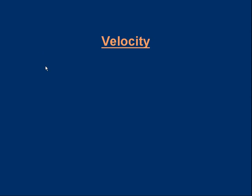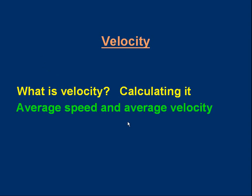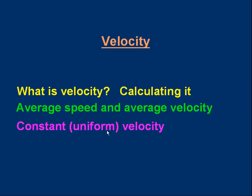Hello. In this lesson we'll look at velocity. We'll remind ourselves what it means and say something about how to calculate it. We'll also look at average speed and how to find average velocity. The term constant velocity or uniform velocity is an important one. We'll make sure we understand what it means. You might find it handy to have a pen and paper because at some points I'll suggest trying something for yourself. So if you want to pause the video you can get your pen and paper now. Let's make a start.